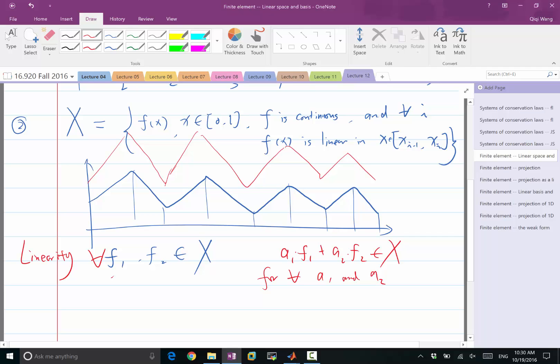And also, if I have both a1 f1 and a2 f2 in the space, adding them together, the sum of two continuous functions is continuous, and the sum of two linear functions is linear. So a1 f1 plus a2 f2 is also continuous and piecewise linear.